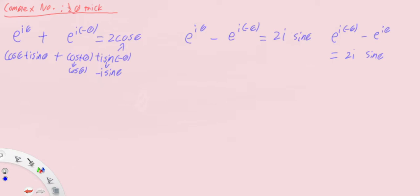These identities are super useful — very efficient. Two complex numbers become a single trigonometric form. Now if I were to multiply by a constant r, so you have r·e^(iθ) + r·e^(-iθ), you are simply multiplying r throughout. So the two conditions are: same modulus and same argument with one positive and one negative, and then you can use these identities.